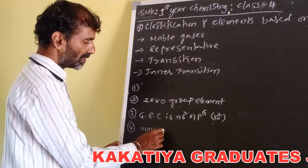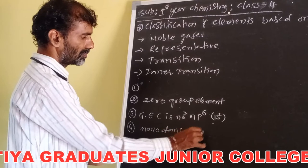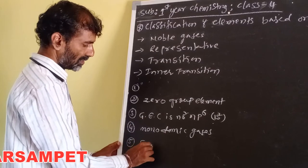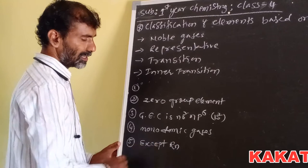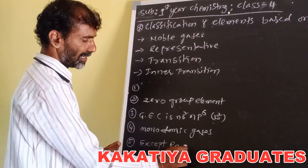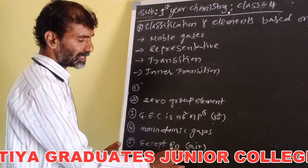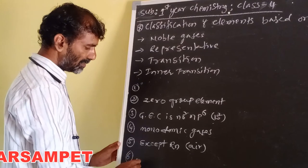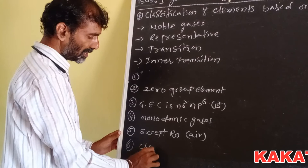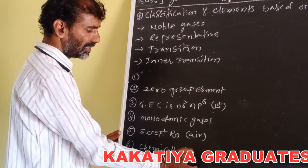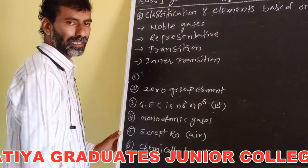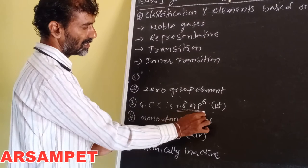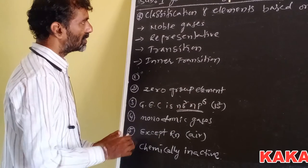All noble gases are monoatomic gases. Except radon, the remaining noble gases are present in air. Noble gases are chemically inactive due to their stable electronic configuration — that is ns2 np6, giving 8 electrons (octet). This concludes noble gases.